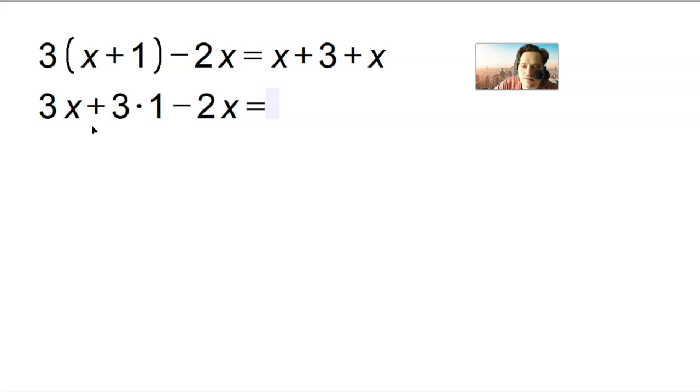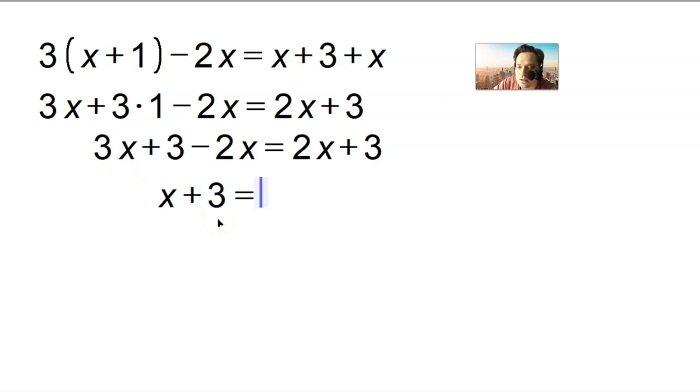I'm going to have here on the left side 3x plus 3 minus 2x equals 2x plus 3. On the left side 3x minus 2x is 1x, so x plus 3. And then here I have 2x plus 3. Stop for a second. It's a little bit different.